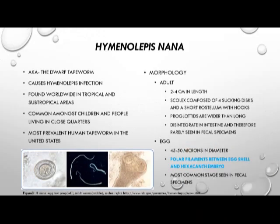The first organism we're going to cover is Hymenolepis nana, known as the dwarf tapeworm, which causes hymenolepiasis infection. It is found worldwide in tropical and subtropical areas, most commonly seen in children and people living in close quarters. It is the most prevalent human tapeworm in the United States. The adult worm is only two to four centimeters in length, hence the name dwarf tapeworm. It has a scolex with four sucking discs and a short rostellum with hooks. The proglottids are wider than they are long and disintegrate quickly in the intestine, therefore rarely being seen in fecal specimens.